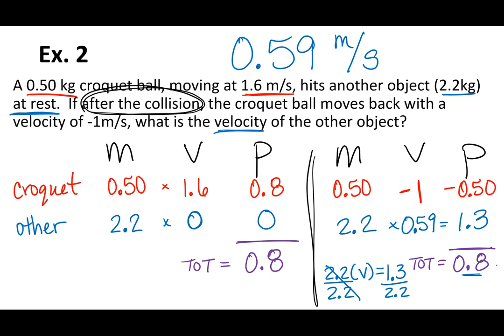Looking at this result, the croquet ball slows down and actually goes backwards — it hits the other object and bounces backwards, which is why it's negative. The other object starts at 0 and is now moving forward at 0.59 m/s. That is it for elastic collisions.